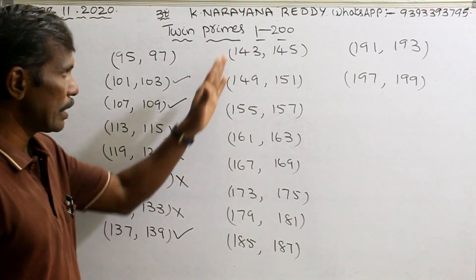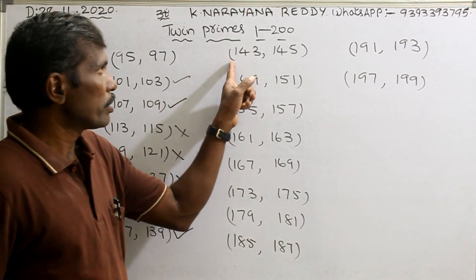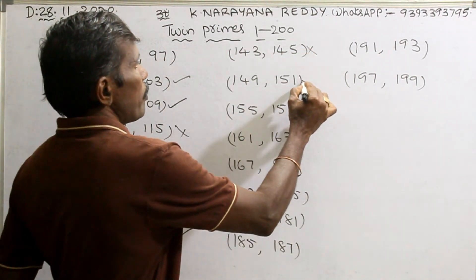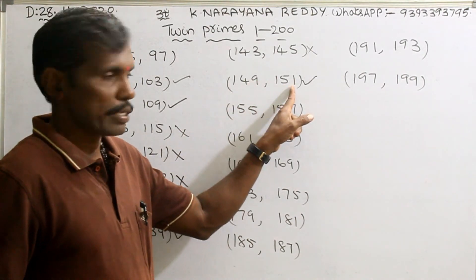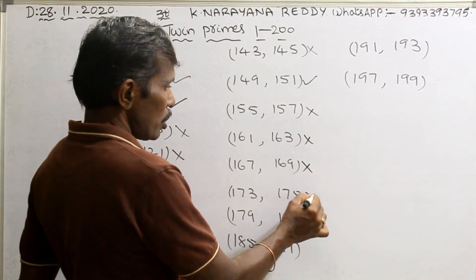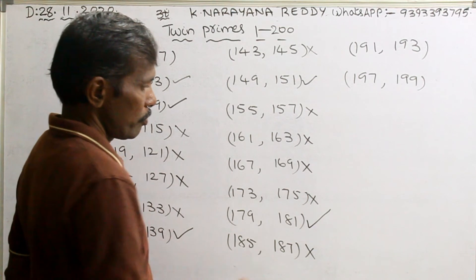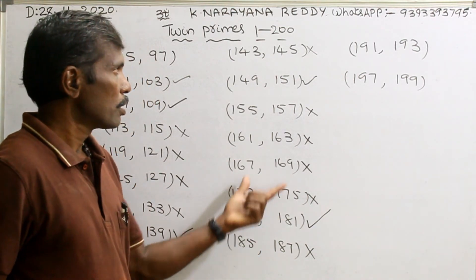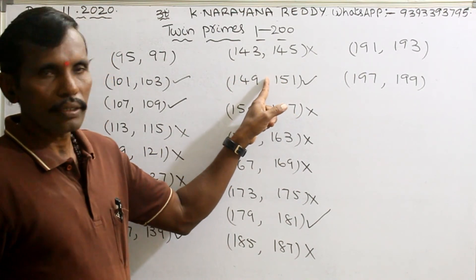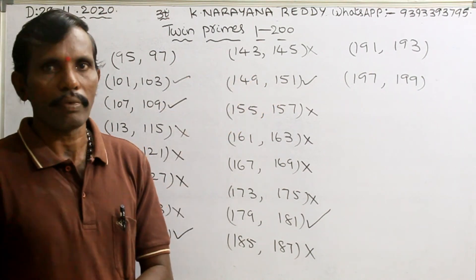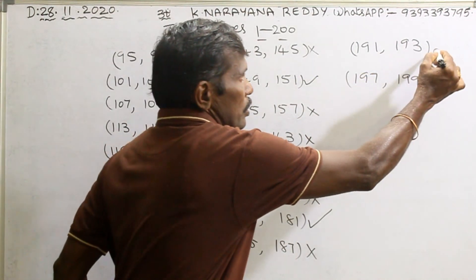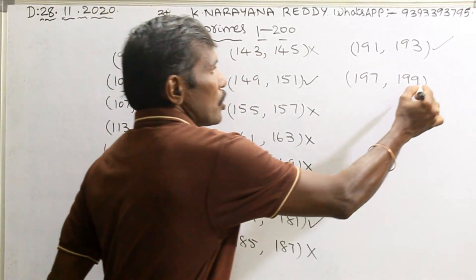Continuing to identify twin primes from 100 to 200 by checking which pairs have both numbers prime. Between some pairs, like (149, 151), the number 150 is composite — confirming the definition. The pair (191, 193): these two are primes, so this is a twin prime. In this way we can identify all the twin primes from 1 to 200.